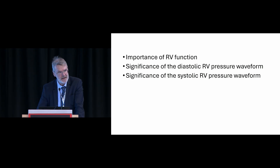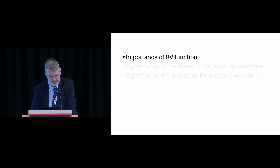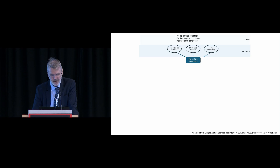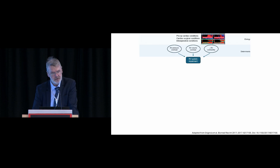I will start by discussing RV function. Whenever you have RV systolic impairment, there are determinants of this condition: RV pressure overload, RV volume overload, or reduction in contractility. There are also triggers from etiology, and as discussed at the Earl Winean lecture yesterday, one of the very important predictors is arrhythmia, which can lead to RV dysfunction and failure.